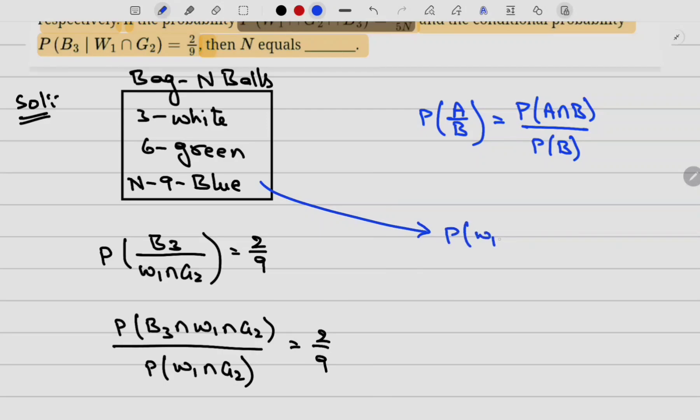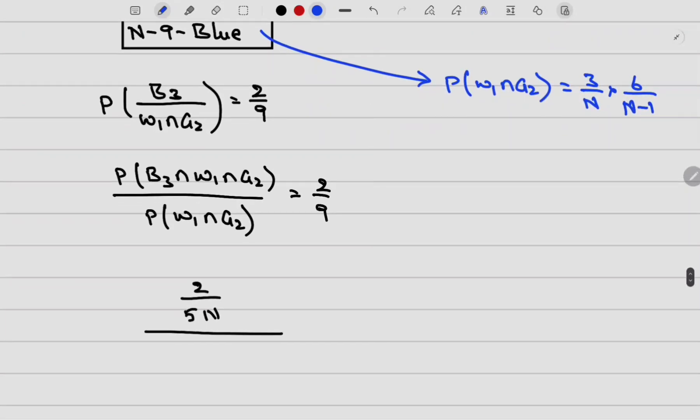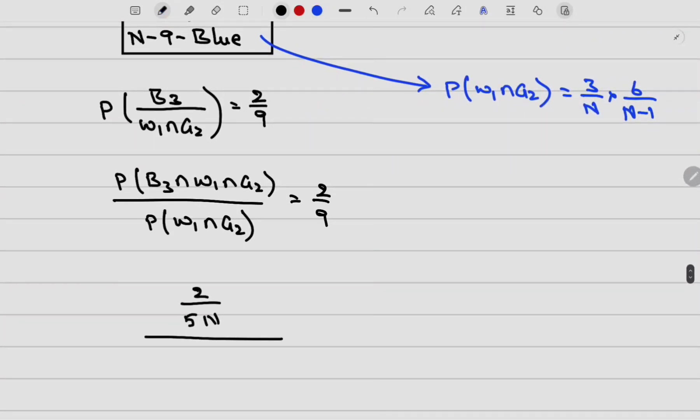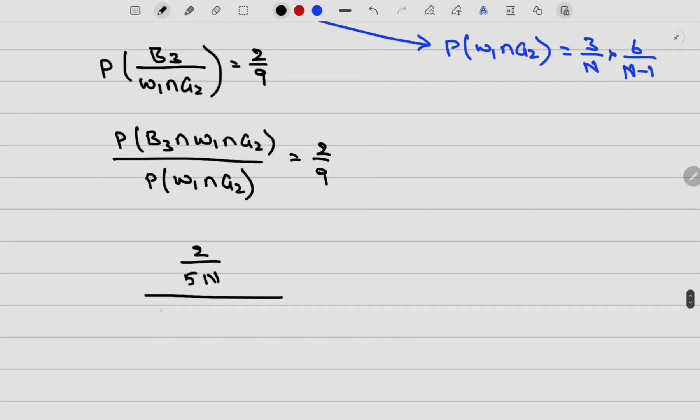So probability of W1 intersection G2 will be equal to... Let me substitute this value here. 3/N into 6/(N-1) will be equal to 2/9.